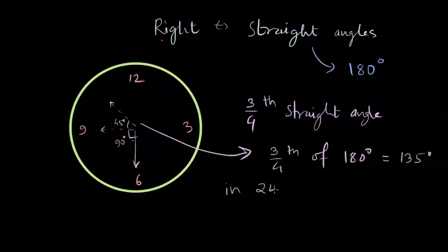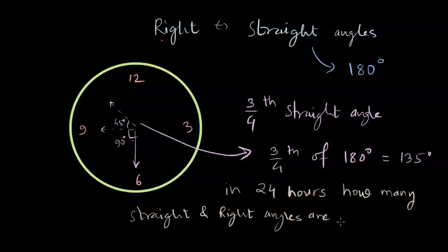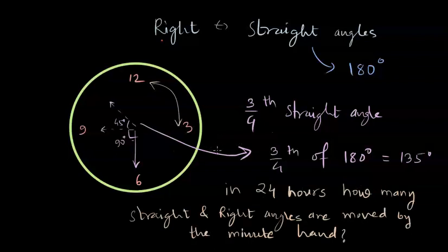So there is this question: in 24 hours, how many straight and right angles are moved by the minute hand? Note that for every 15 minutes it will complete the movement of 90 degrees. So use this information and try to answer this question. Pause this video to solve this question before I share the answer on the screen.